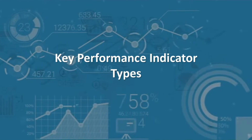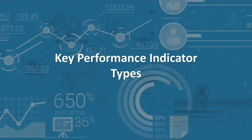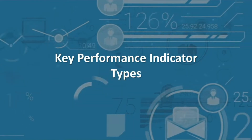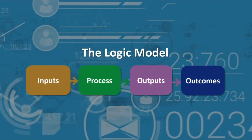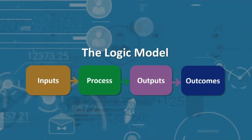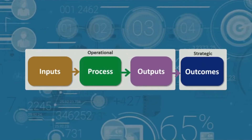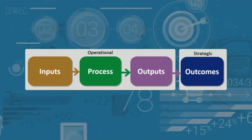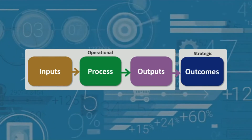In this short video, I'm going to introduce different types of key performance indicators. For the first four types, we will use a framework called the logic model. The logic model is a framework that is helpful for differentiating what we produce from what we can only influence. It is also helpful for separating between elements that are more operational versus those that are more strategic in nature.